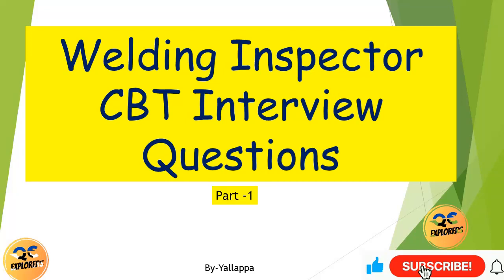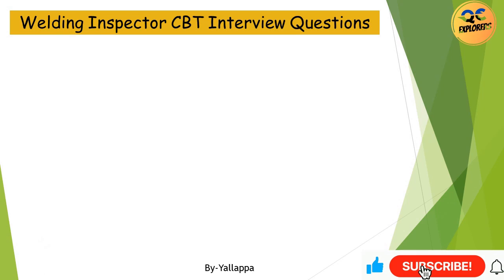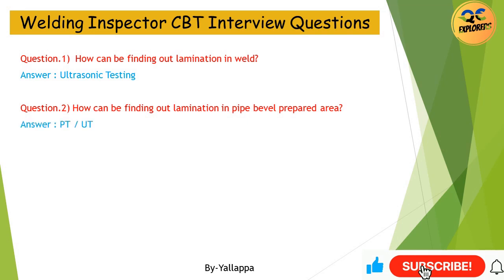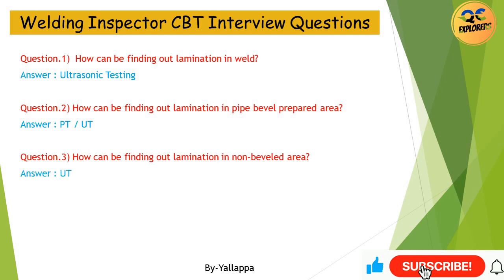Welding Inspector CBT Interview Questions. Question 1: How can lamination in weld be found? Answer: Ultrasonic Testing. Question 2: How can lamination in pipe bevel prepared area be found? Answer: PTUT. Question 3: How can lamination in non-beveled area be found? Answer: UT.